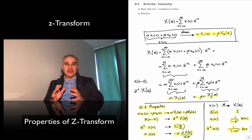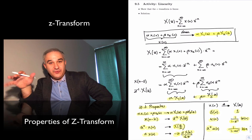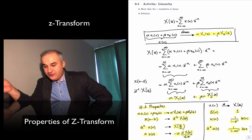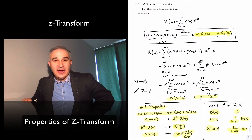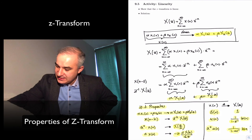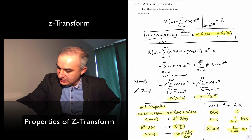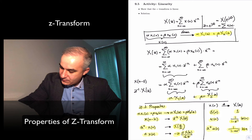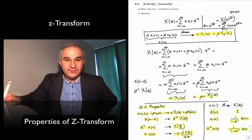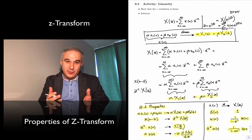Just look at the properties — they mimic the properties we saw for the Fourier transform. If you look at the discrete-time Fourier transform: linearity, shifting, multiplication in the time domain, etc., this all applies to the C-transform as well. Remember, if you evaluate the C-transform for C equals e to the j omega hat, you end up with X of e to the j omega hat, which is the discrete-time Fourier transform — the same way evaluating the Laplace transform along the j omega axis gives the continuous-time Fourier transform.